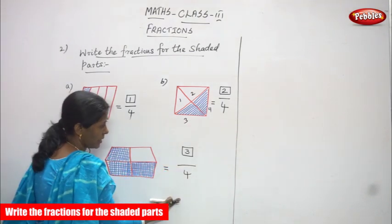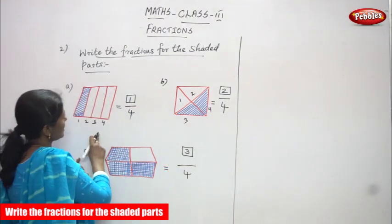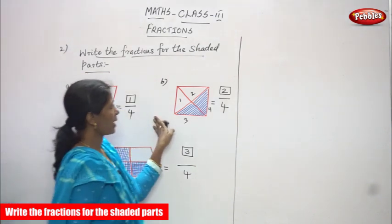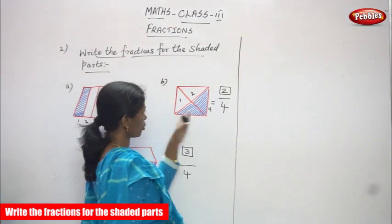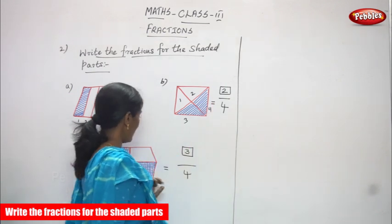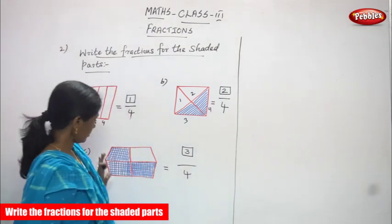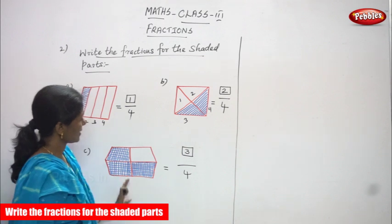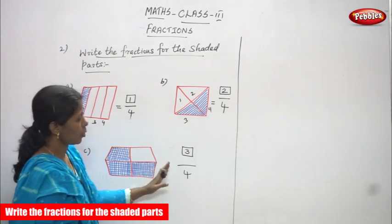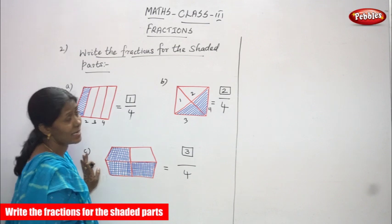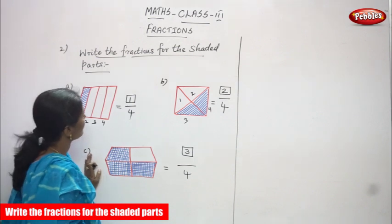The total part is four for the first sum, second sum, and third sum as well. For shaded portions: A question — only one part shaded, so one in the box. B question — two parts shaded, so two in the box. C question — three parts shaded, so three in the box. This is the answer. I think you understand the sum: write the fraction for the shaded parts.